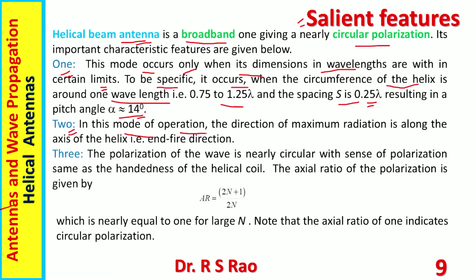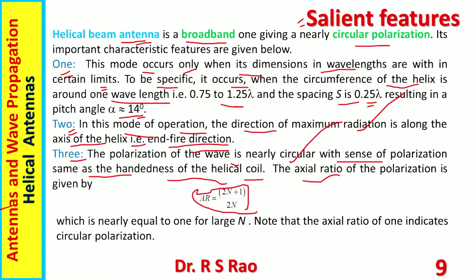In this mode of operation, the direction of maximum radiation is along the axis of the helix — end-fire direction. Polarization of the wave is nearly circular with the sense of polarization same as the handedness of the helical coil. The axial ratio of polarization can be found equal to (2N+1)/2N. When N is large, the axial ratio AR becomes 1, meaning circular polarization. AR = 1 means circular polarization.